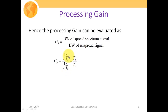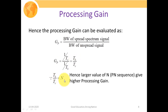GP is approximately equivalent to TB/TC, since we approximate the bandwidth of the spread signal to 1/TC, although it is actually equivalent to 1/TB + 1/TC as seen in our last lecture. Since TB/TC equals N, the larger the value of N in the PN sequence, the higher the processing gain — both have a direct relationship.